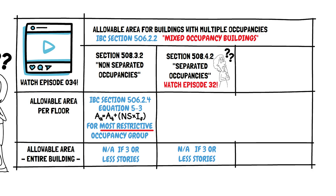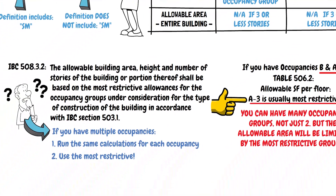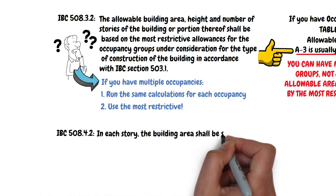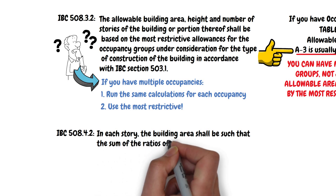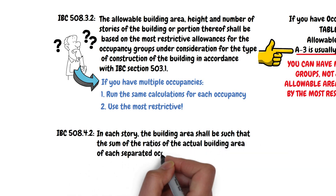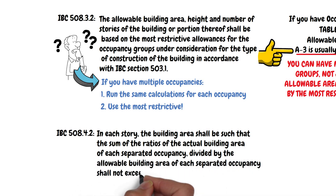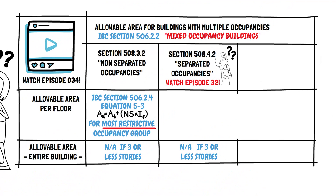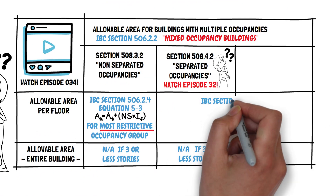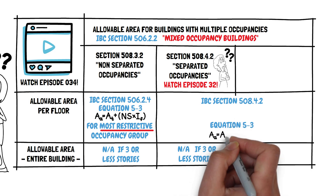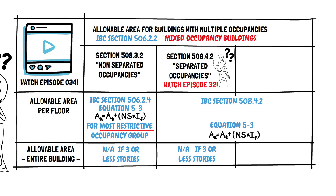But how do you figure out the allowed square footage in a building with Separated Occupancies? Section 508.4.2 states: in each story, the building area shall be such that the sum of the ratios of the actual building area of each Separated Occupancy divided by the allowable building area of each Separated Occupancy shall not exceed 1. First, find the allowed area for an occupancy using Equation 5.3. Next, determine the actual area of the occupancy. Last, check that the ratios do not exceed 1.